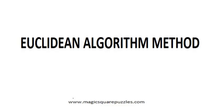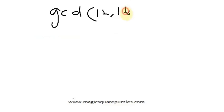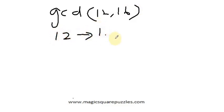Friends, now we will see how to find the GCD of two given numbers. We will find it for a fairly small number: 12 and 16. What are the divisors of 12? Of course, one is a common divisor for all numbers — one, two, three, four, six.